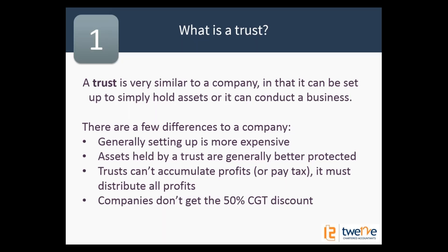Another important thing to know: if you own an asset for more than 12 months as an individual, you only pay capital gains tax on half the profit — you get a 50% capital gains tax discount. Companies don't get that. If you own shares or property inside a company and sell for a profit, you pay tax on the full amount. But trusts distribute the capital gain to a beneficiary — a person — who then gets the 50% CGT discount. Really important to know that.